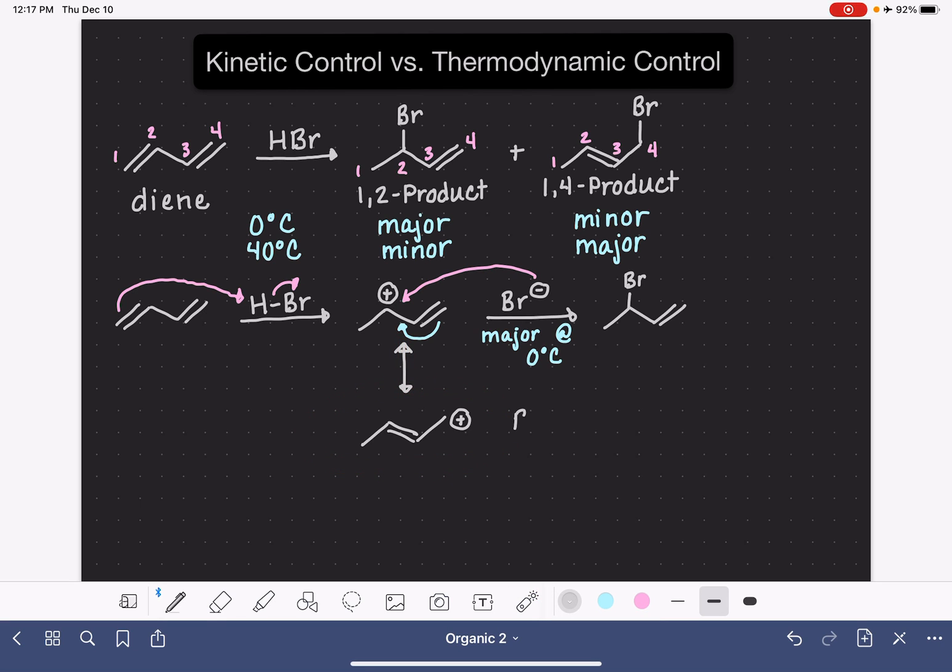Once that less stable carbocation is formed, the bromide ion then goes ahead and attacks that carbocation, and this gives us our 1-4 product. And this is our major product when we are at high temperature, 40 degrees C.